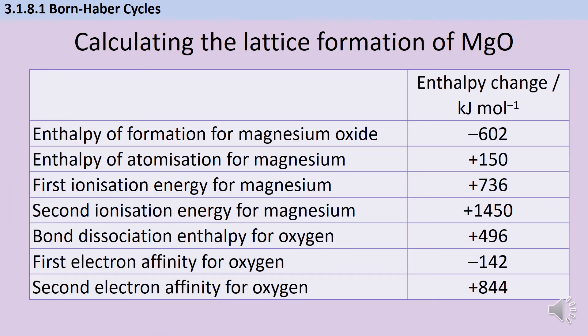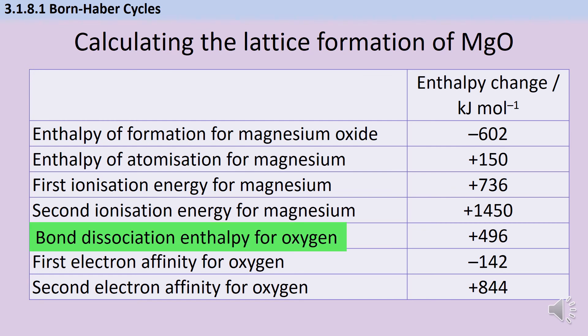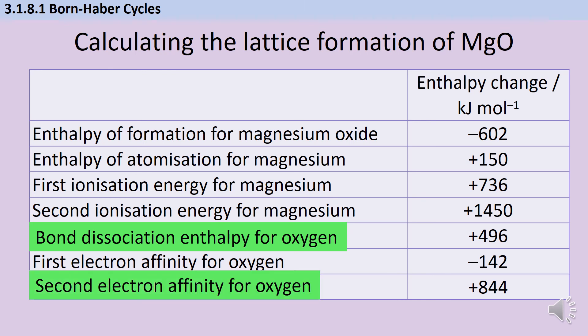To finish off, let's look at magnesium oxide. Now, there are two things that are slightly different in this question. The first one is that rather than give us the enthalpy of atomisation, which we've used in the past, they've given us the bond dissociation enthalpy for oxygen. Although the arrow is going to be the same, that means that we have to treat the number we've been given slightly differently. The second thing is that, of course, oxygen is in group six, so it makes ions with a two minus charge, and therefore we have a second electron affinity for oxygen.